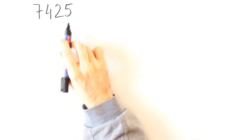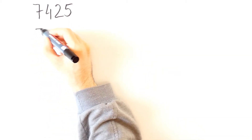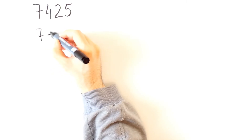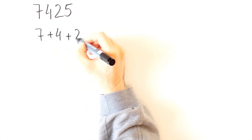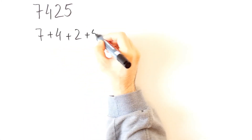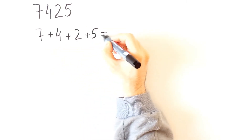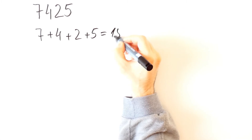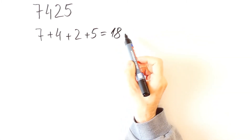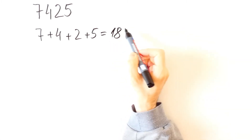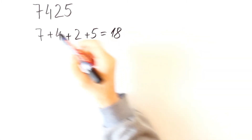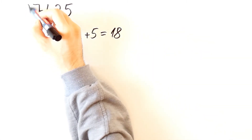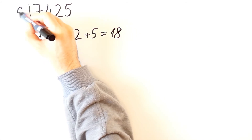The sum of digits of this number is 7 plus 4 plus 2 plus 5, and that is equal to 18. Since 18 is divisible by 9, this number will also be divisible by 9.